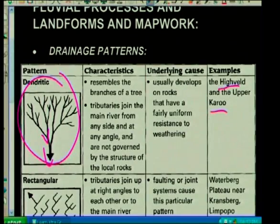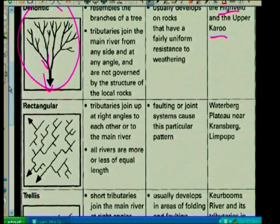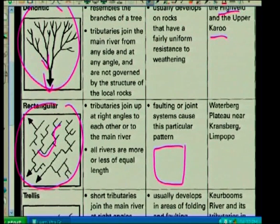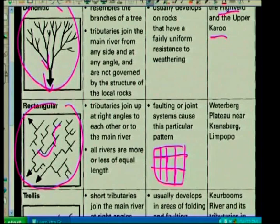The rectangular pattern is where the main stream has 90-degree bends. It forms in rocks that are jointed — the river flows between the joints, creating 90-degree bends in the main stream. The tributaries join at right angles. Then we have the trellis pattern where the main streams are parallel to one another, very common in areas where there is folding. The streams flow in the valleys created by folding, so they have parallel main streams, and the tributaries join at right angles.